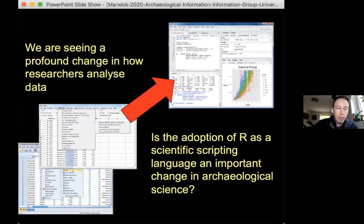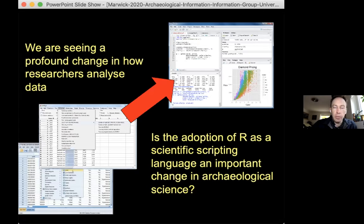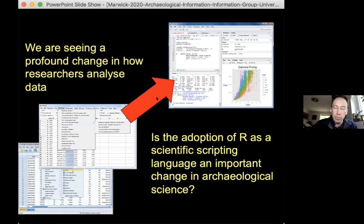The question this brings me to is the adoption, especially of R - the programming language R - amongst archaeologists, and also in biology, ecology, sociology, political science. Python is another similar language much more common in, say, chemistry and physics. Is the adoption of these open source scripting languages for numerical and statistical work an important change in archaeological science, or is this just a niche phenomenon with no great relevance and no implications for curriculum, communication, and publication?